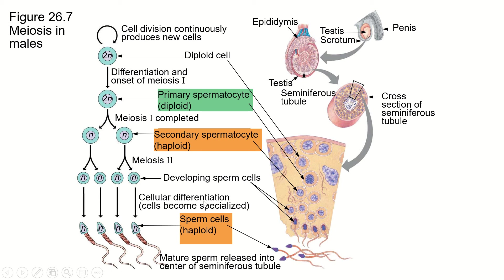So in the human male, everything proceeds normally. We start off with one cell and we end up with four haploid cells.